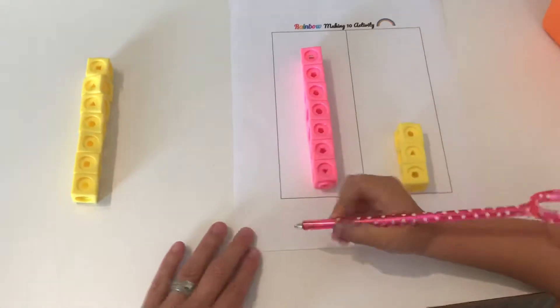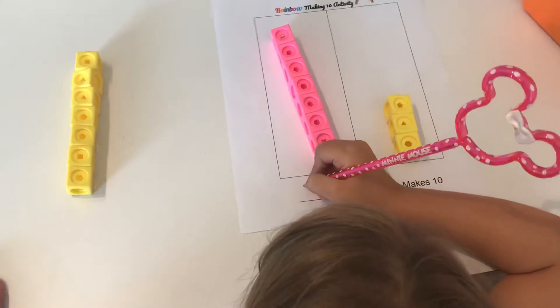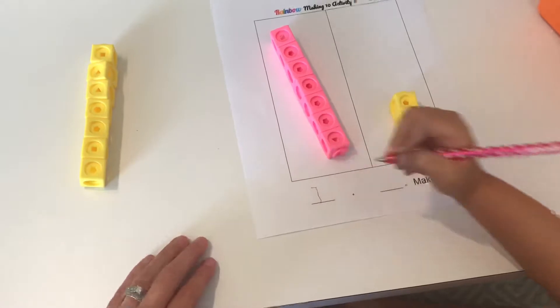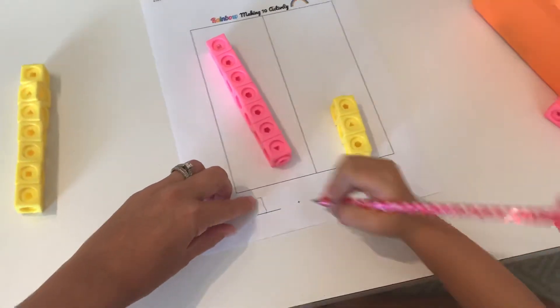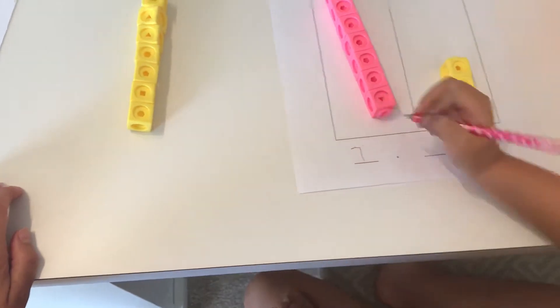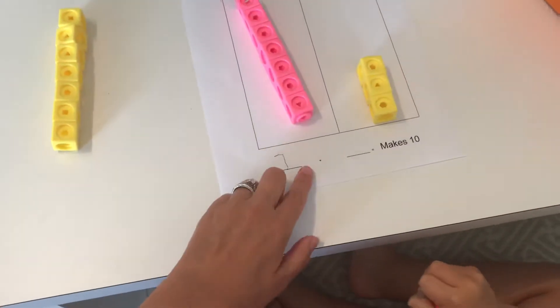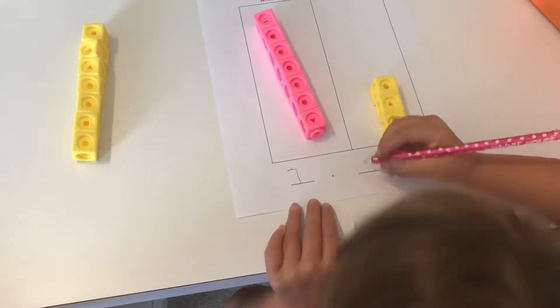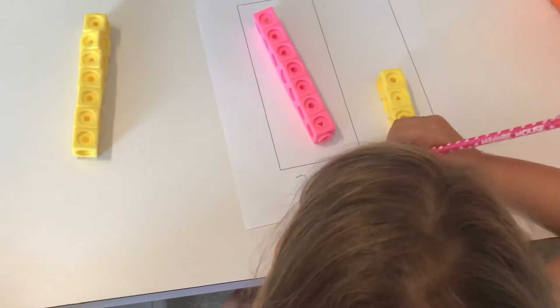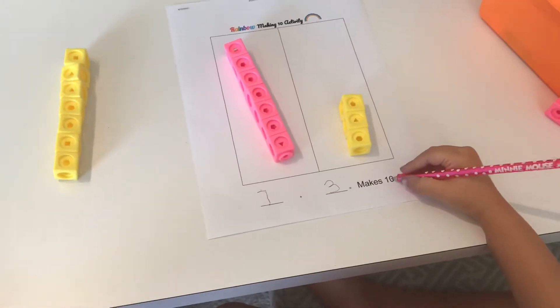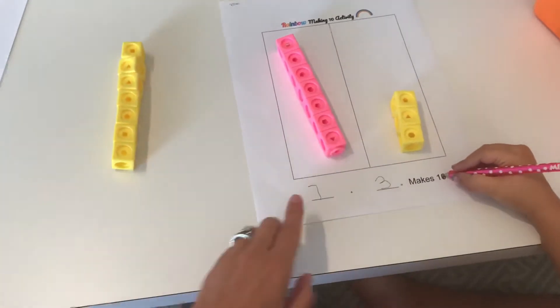There you go. Try to make that line just a little longer for the seven. There we go. Plus, and how many yellow? Three. Equals ten. Nice job and nice three.